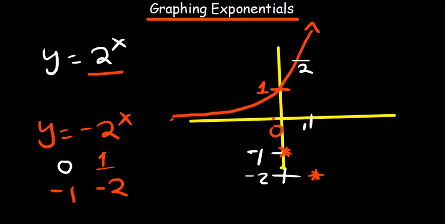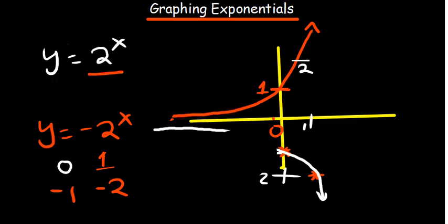As the values of x increase, the y-values become more negative, which is why the graph goes downward. The x-axis is still the asymptote — the graph does not cut it. That is how the graph differs in terms of the sign of the coefficient.